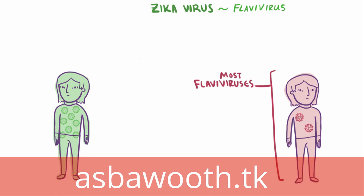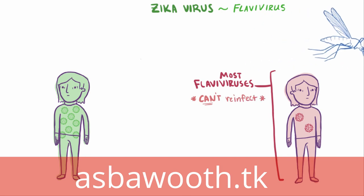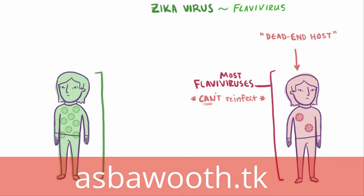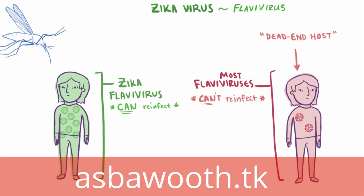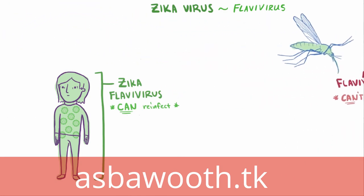With most flaviviruses, though, the virus isn't able to replicate enough in the human host to actually be able to reinfect another mosquito, and so the human is considered a dead-end host. However, the Zika virus, along with yellow and dengue fever, is well enough adapted to human hosts such that it can multiply to a point where it can reinfect another unsuspecting mosquito, which can then go on to infect more people.